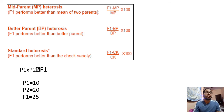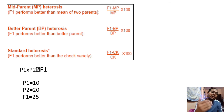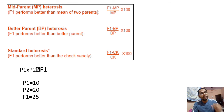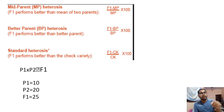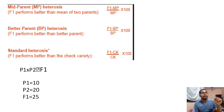Likewise, you can calculate Better Parent Heterosis. Better Parent Heterosis means the F1 performance is better than the better parent. Suppose P1 parent mean is 10 and P2 parent mean is 20. So F1 should be better than its better parent, which here is 20. If there is Better Parent Heterosis, this F1 should be more than the better parent value of 20.